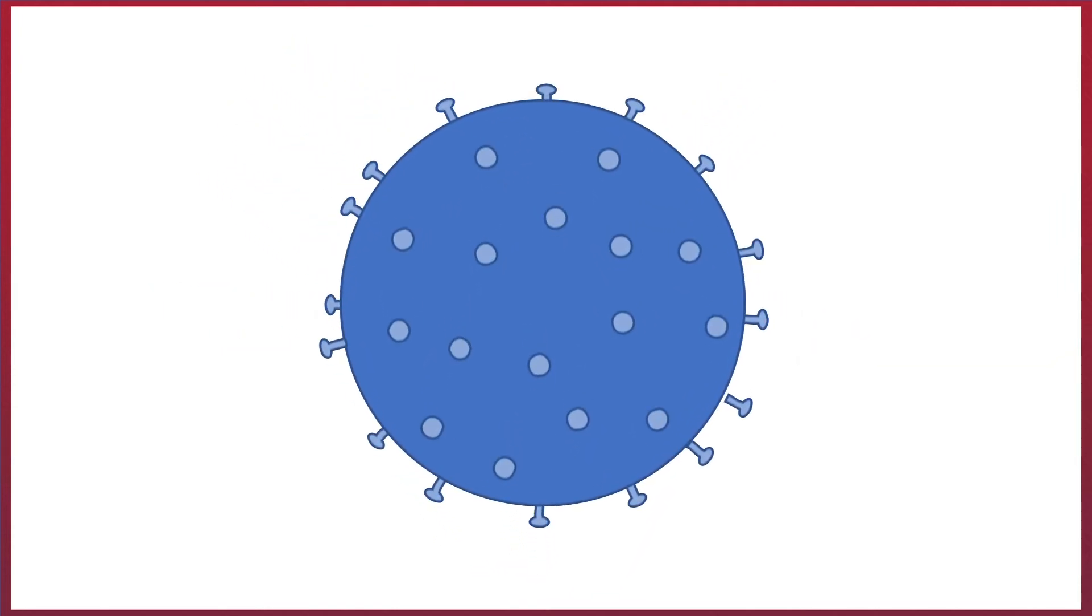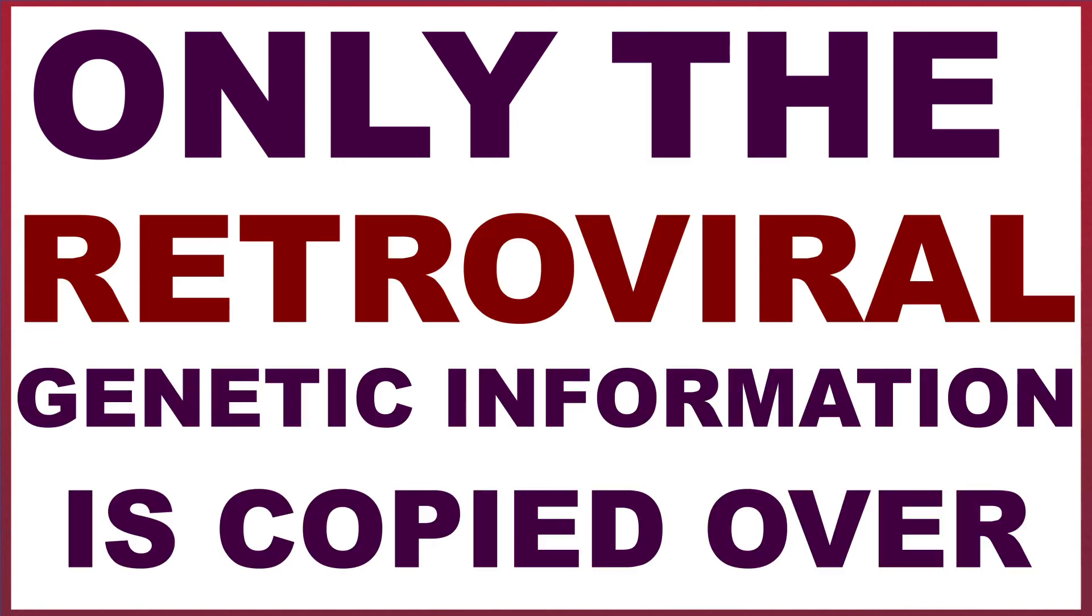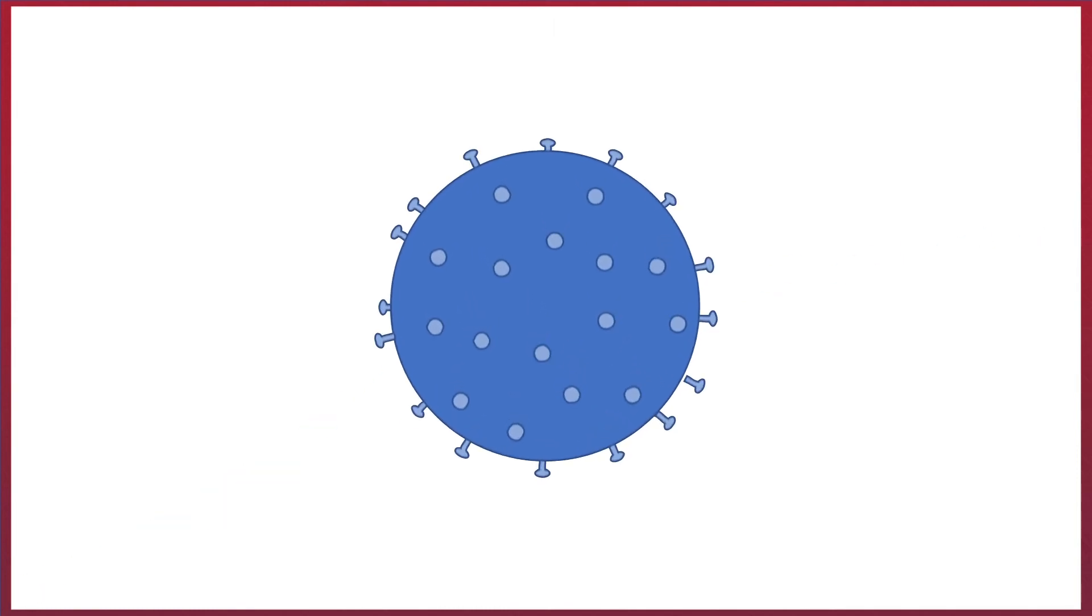It's worth noting that when replicated, only the retroviral DNA is copied over. So, what if the virus simply contained all the genes needed to give Peter Parker these powers? Would it be possible for a retrovirus to contain all of the spider's genes necessary, for all of the spider's powers to get expressed?